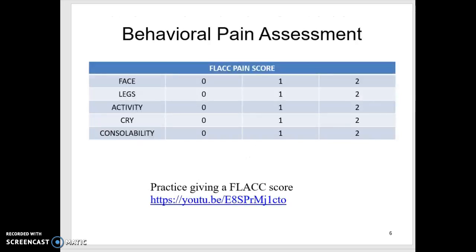The other frequently used pain scale at Children's is the behavioral FLAC scale. We give a score between 0 and 2 based on five categories: Face, Legs, Activity, Cry, and Consolability.